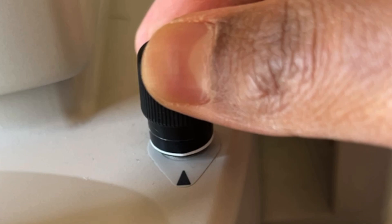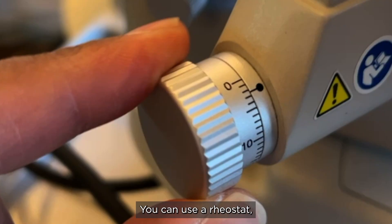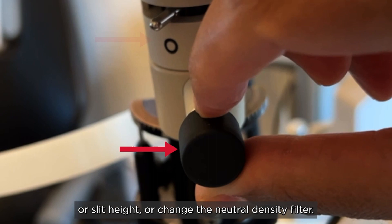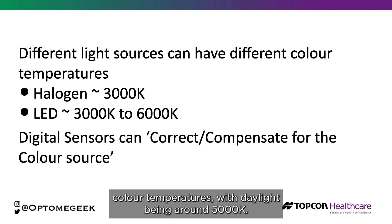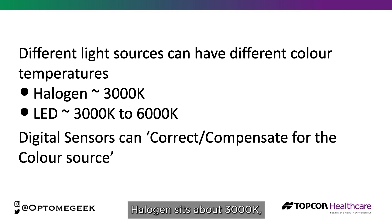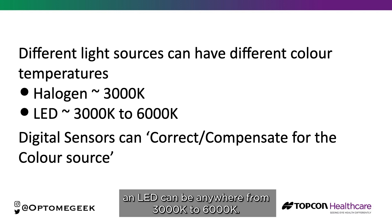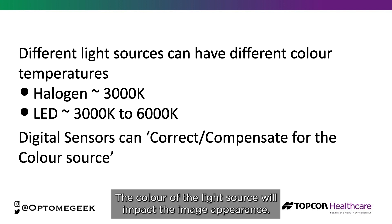So how do we control the amount of light reaching the subject? You can use a rheostat, adjust the slit width or slit height, or change the neutral density filter. You'll remember from university that different light sources have different colour temperatures, with daylight being around 5000 Kelvin. Halogen sits at about 3000 Kelvin and LED can be anywhere from 3000 Kelvin to 6000 Kelvin. The colour of the light source will impact the image appearance.